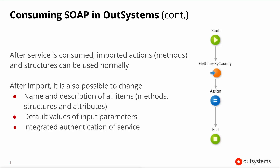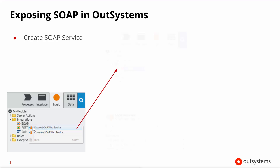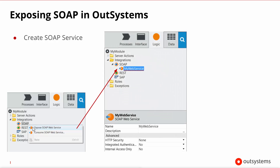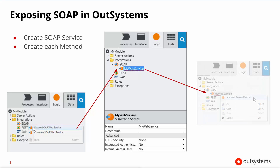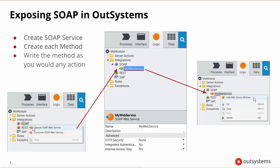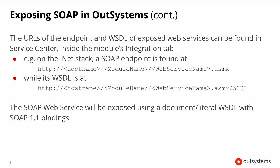The process of exposing a SOAP web service is very similar. In the logic tab you can select to expose a web service, then for each method you want to export you can create it on the web service node, and then it's just a matter of writing the code of these methods as you would do for any other action in your module. It's important to note that you do not have to worry about managing the WSDL file — that's taken care of by the OutSystems platform — and you can see the location of these important files for your web service.